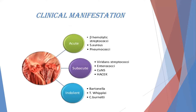The clinical manifestation of infective endocarditis depends on the type of microorganism. Presentation can be acute — typically from Staph aureus or streptococci — subacute, related to viridans streptococci, enterococci, or some coagulase-negative staphylococci, or indolent, usually from less common microorganisms like Bartonella or Coxiella burnetii.